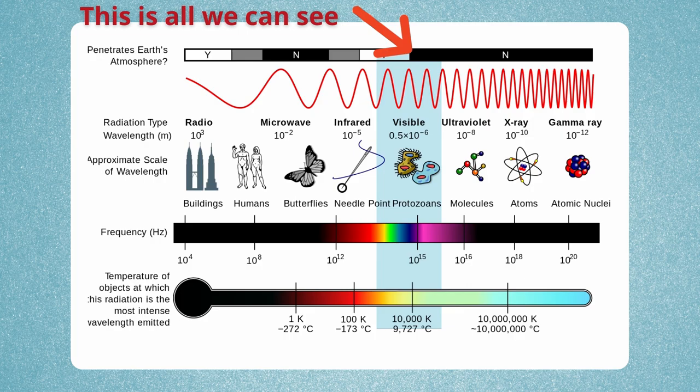The visible light that we can see with our eyeballs makes up only a tiny portion of all the light that exists. But what exactly is light?